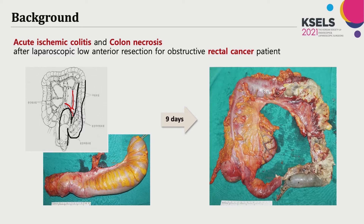Six years ago, I had a painful experience with an obstructive left-sided colon cancer patient. We performed laparoscopic low anterior resection and primary anastomosis. After high ligation of IMA, colon viability was uncertain under visual inspection. After nine days, the remnant left side colon became necrotic and we needed to perform total colectomy and permanent ileostomy. My story started with this patient.